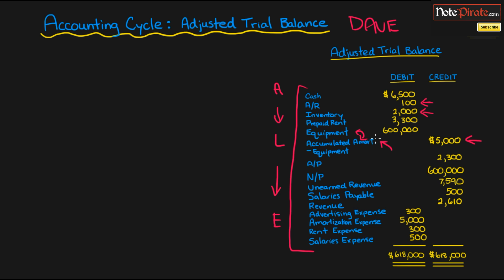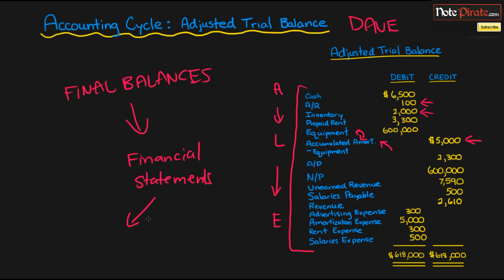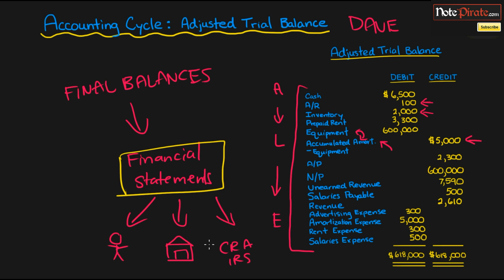Essentially, the reason we construct the adjusted trial balance is because it gives us an idea of the final balances of all accounts. This is important because our next step in the accounting cycle is preparing financial statements, which we can then pass out to users — maybe for investing in the company, maybe to a bank to apply for a loan, or maybe to the CRA or the IRS for reporting tax and income for tax purposes. That is the point of our adjusted trial balance. Hopefully I cleared all that up, and I'll see you in the next tutorial when we talk about financial statements.